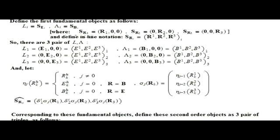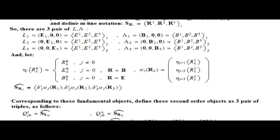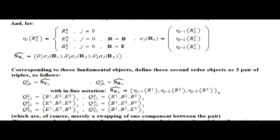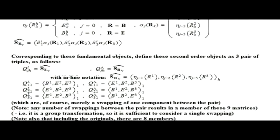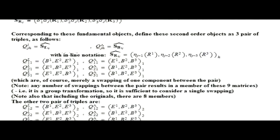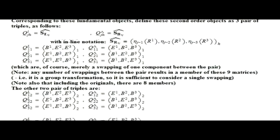Corresponding to these fundamental objects, define these second order objects as three pair of triples as shown here, which are, of course, merely a swapping of one component between the pair. Note, any number of swappings between the pair results in a member of these nine matrices. That is, it is a group transformation, so it is sufficient to consider a single swapping. Note also that including the originals there are eight members.